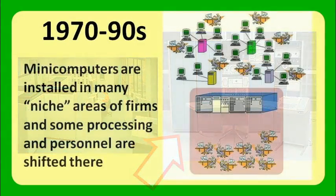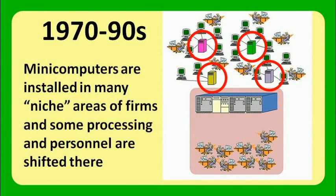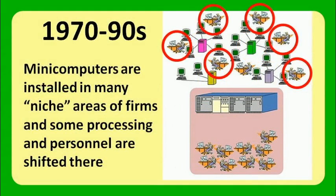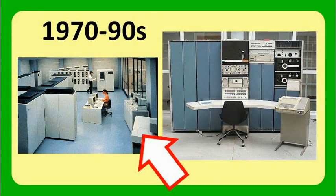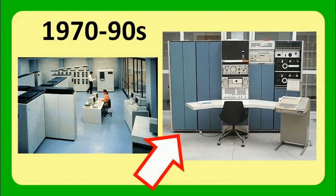Mini-computers, when placed out in various departments, tended to be isolated islands of computing. Some programming personnel might have been shifted to outlying areas, implying the complement of programmers supporting the mainframe may have declined — though that wasn't always the case, because demand for applications usually meant information processing was growing. At the left you see a mainframe computer installation with several boxes and input-output devices. To the right is a typical mini-computer of the 1970s; that set of cabinets is the entire computer, with a printing device for the operator and dumb terminals for users.